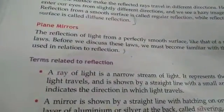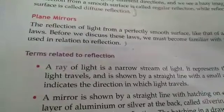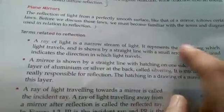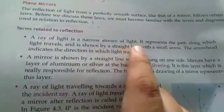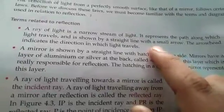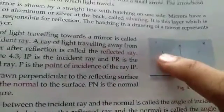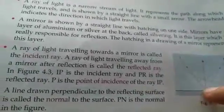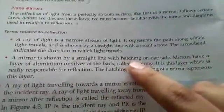With a plane mirror and smooth surface reflection, we see the image very clearly. Now, the laws of reflection — a ray of light is a narrow stream of light which represents the path along which light travels, shown by a straight line with a small arrow indicating the direction. A portion of a mirror is shown by a straight line with hatching on one side.